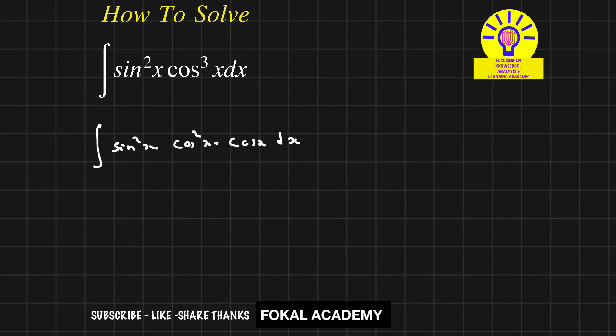We know that sin²x plus cos²x equals 1. So from this, cos²x equals 1 minus sin²x.